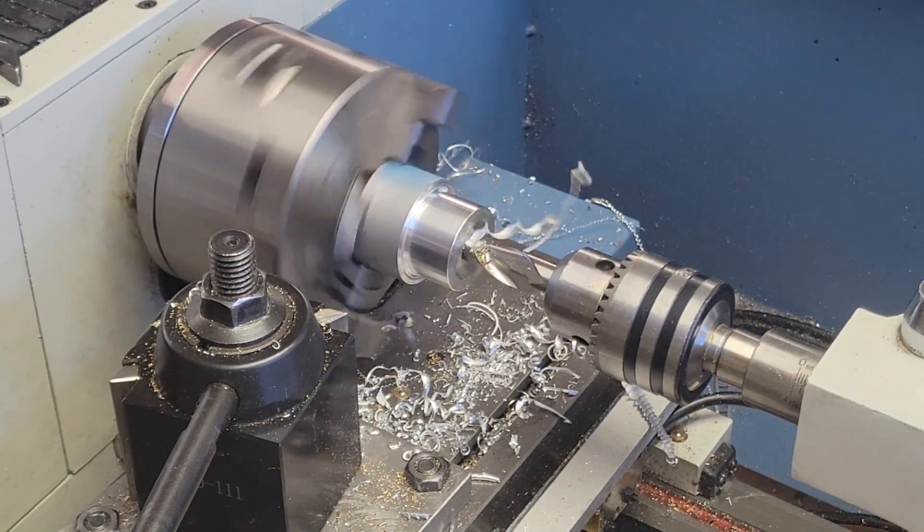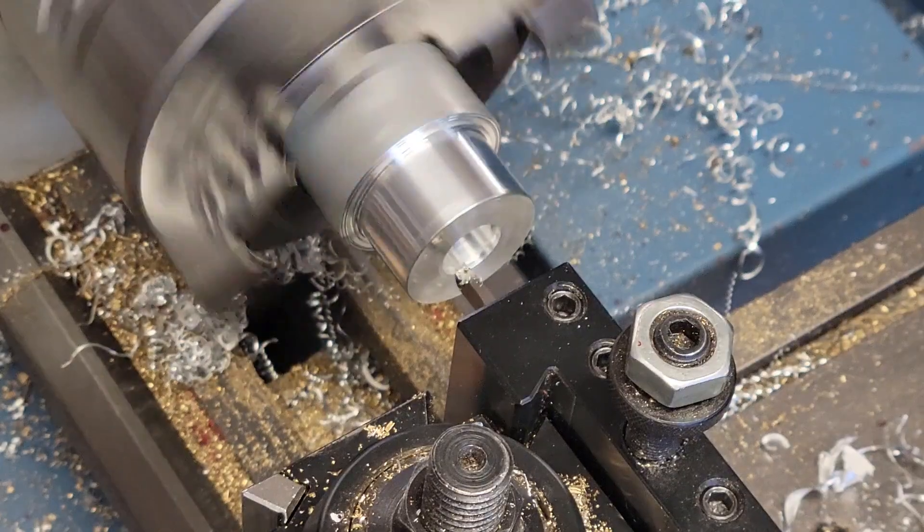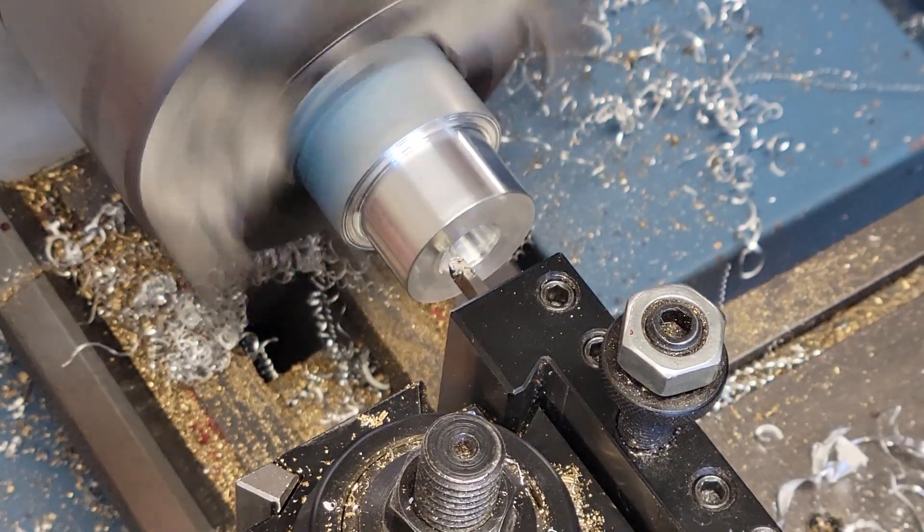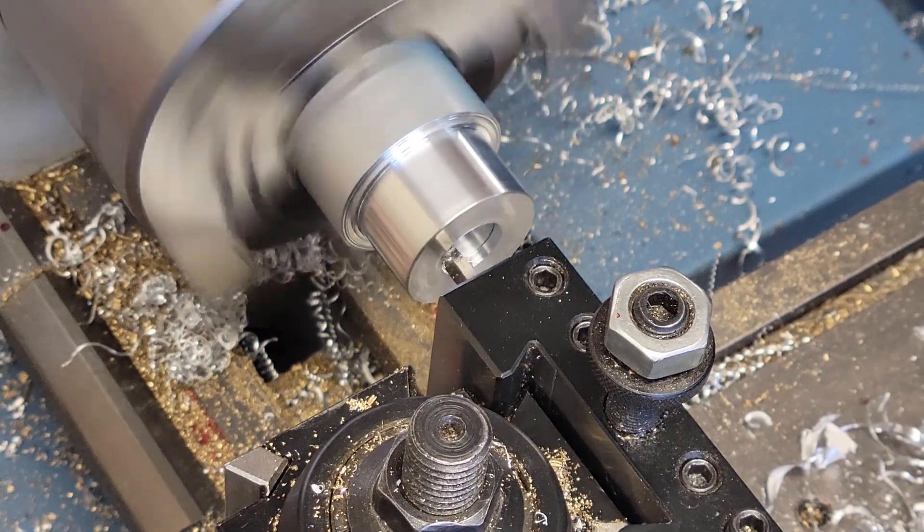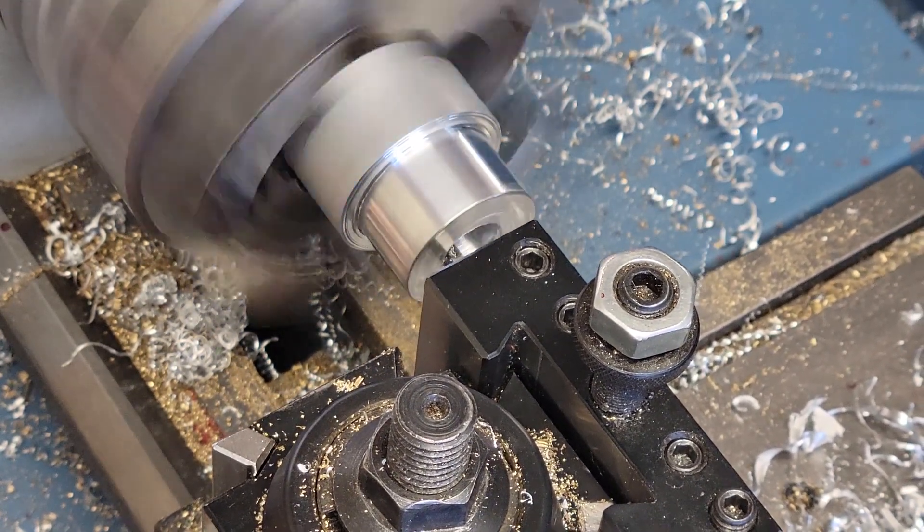Then use a half inch end mill to give myself a nice flat bottom. And then finish up with a small boring bar to bring the inside pocket to the proper diameter.